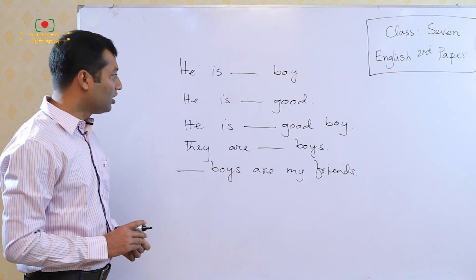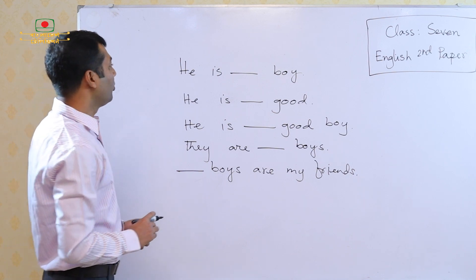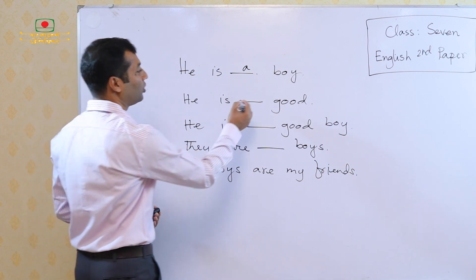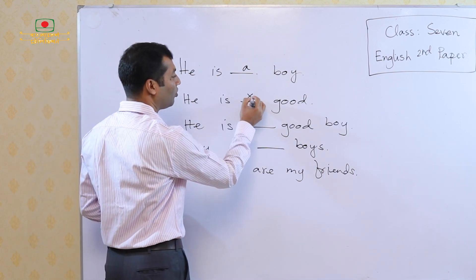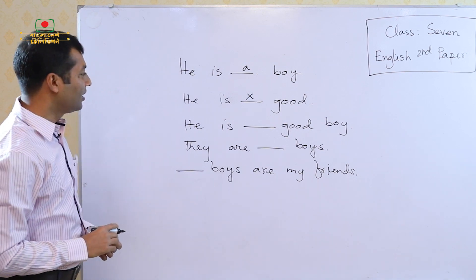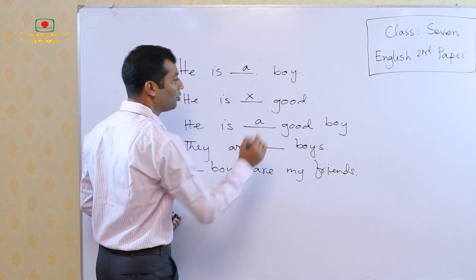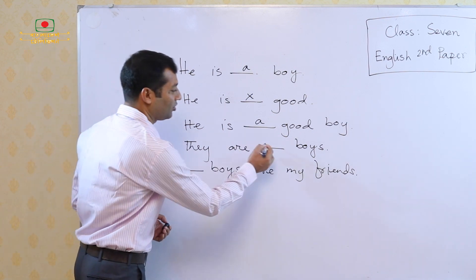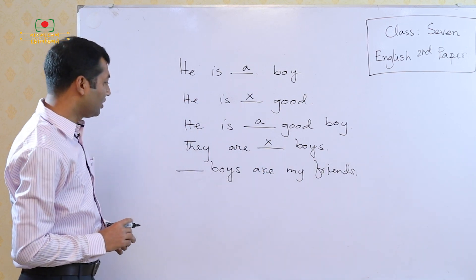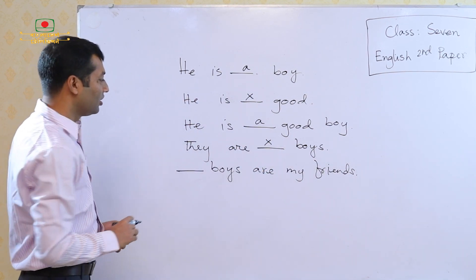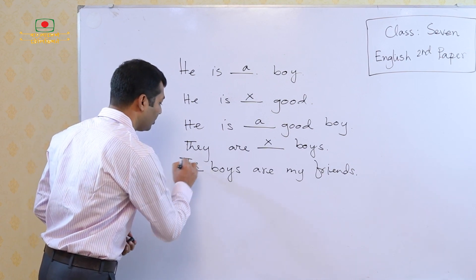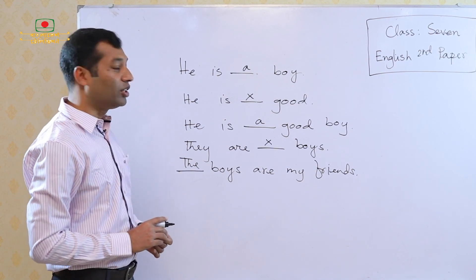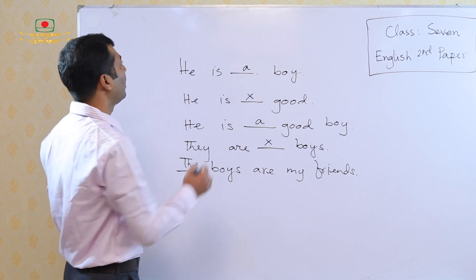So if I ask you to fill in the blanks, what will you do? You will use 'a' here: he is a boy. And the next sentence, he is good — there will be no word, so it will be a cross. In the next sentence: he is a good boy. Come to the fourth sentence: they are boys, so no article will be used. And in the fifth sentence: the boys are my friends. So students, you can easily understand what we are going to learn today — we are going to learn articles.